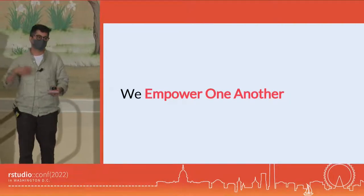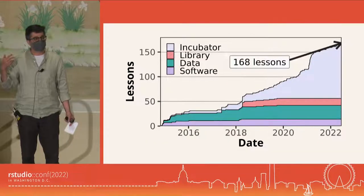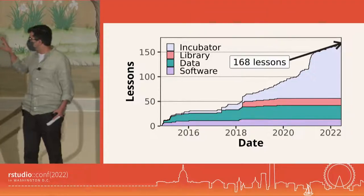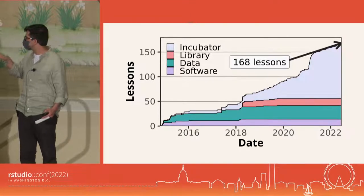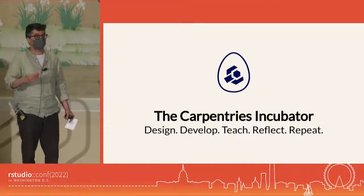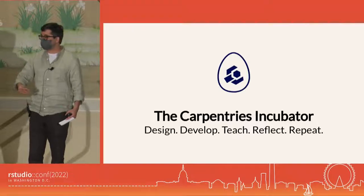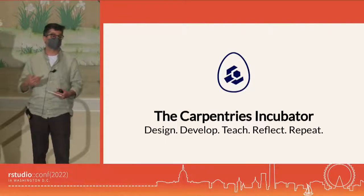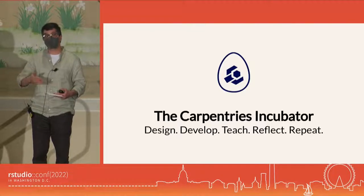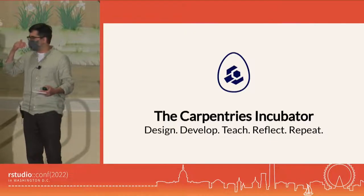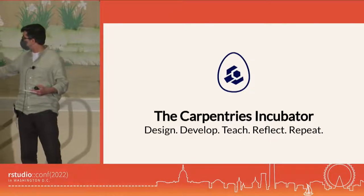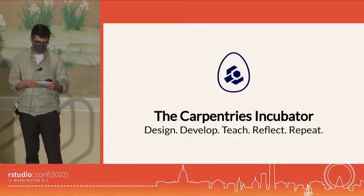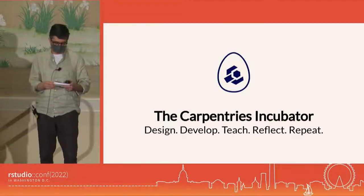Finally, we empower one another. The Workbench is going to support 168 lessons come January. Most of these lessons are in the Carpentries Incubator, where people are actively developing lessons, working on them, testing them out, teaching them, getting feedback, and revamping them in an iterative development cycle that eventually leads to peer review of lessons. The Carpentries Workbench makes this model sustainable — it makes it much easier for people to do these iterations with all of the safeguards we've built in.